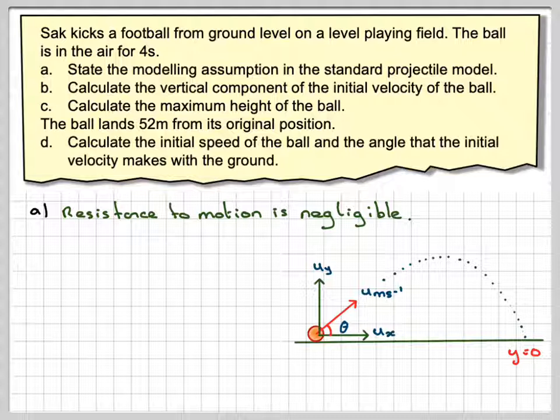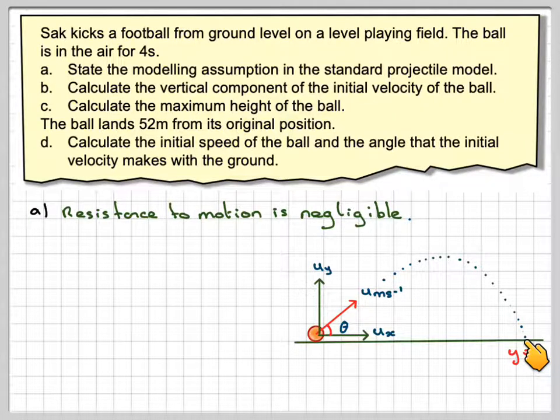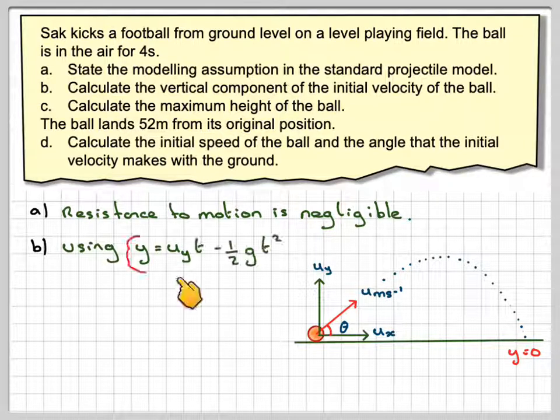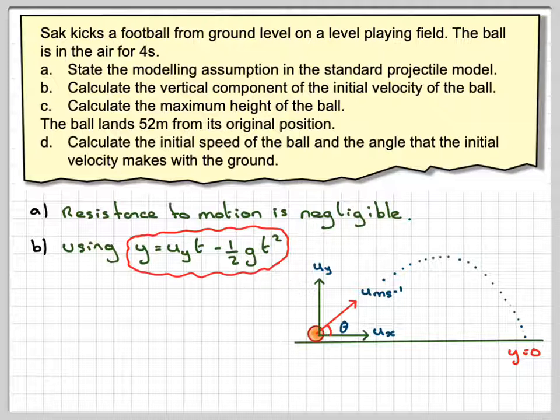To find this component here of the initial velocity, we're going to first of all put y is equal to zero and when t is equal to four. So using y is equal to uyt minus a half gt squared,